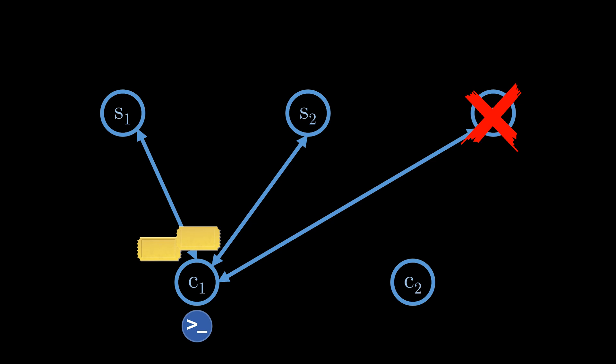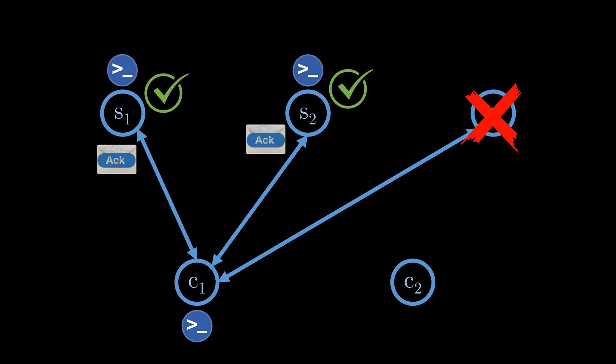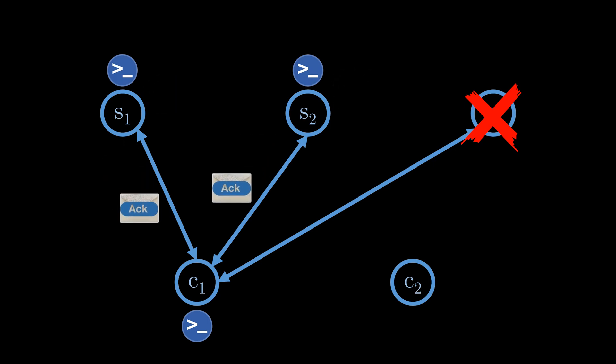Once the client has enough tickets, it sends the command that it wishes to execute on the servers back together with the tickets. If the tickets are still valid, the servers store the received command and return an acknowledgement to the client.